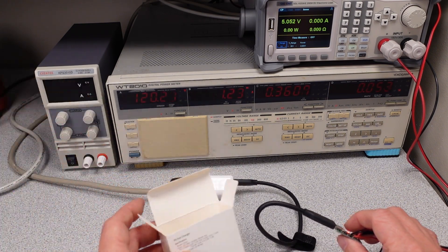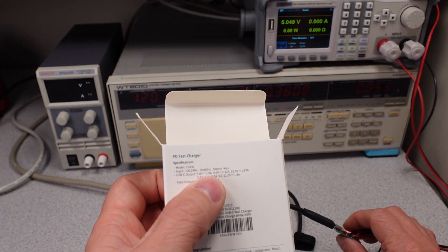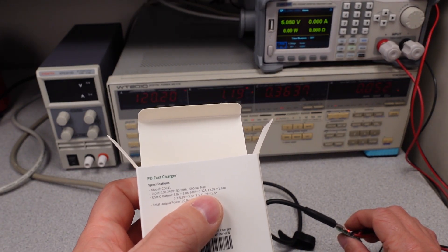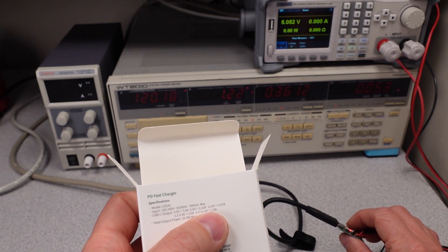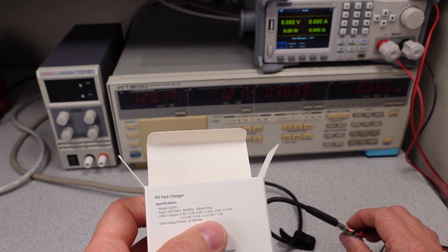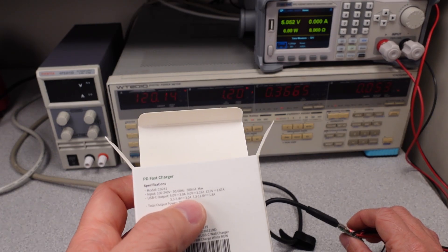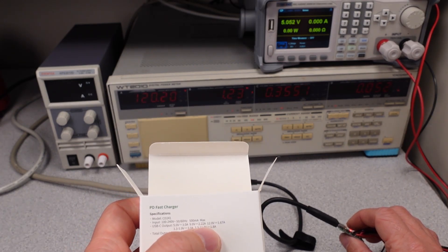When we look at the box on this, we can see that for 5 volts they say up to 3 amps, 9 volts 2.22 amps, 12 volts 1.67 amps, and then they have the variable modes, which are going to basically fluctuate around.